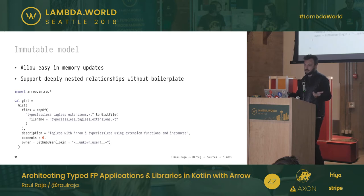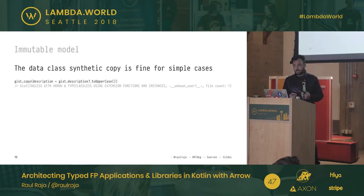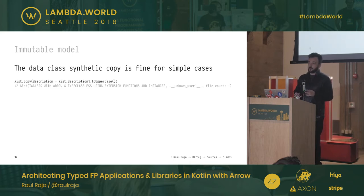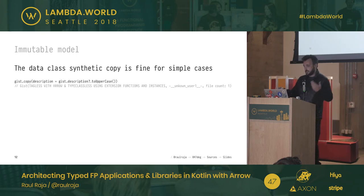We can construct the model in memory like this, or it will come from JSON serialization when using the GitHub API. Kotlin provides a synthetic `copy` method injected by the compiler whenever you define a data class, plus free implementations of `equals` and `hashCode`. They're directly compatible with Java beans.